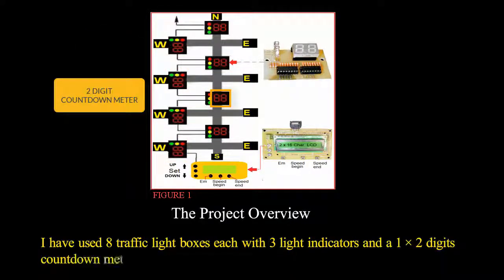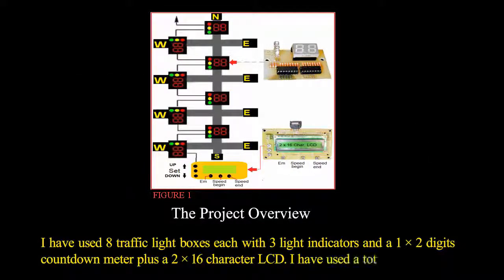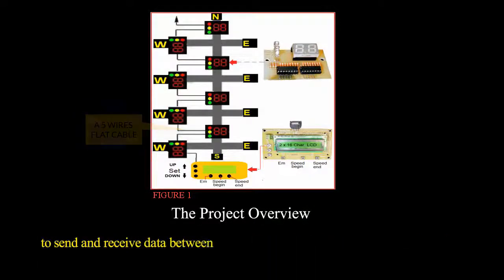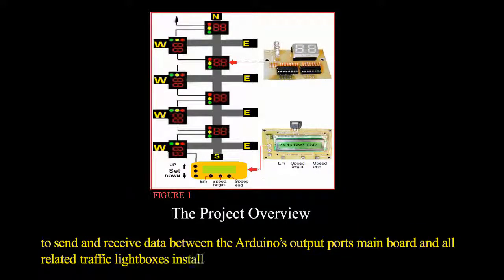I have used a total of five wires to send and receive data between the Arduino's output ports main board and all related traffic light boxes installed on the four intersections of the prototype system in a daisy chain fashion, plus the +5V and ground power supply wires.